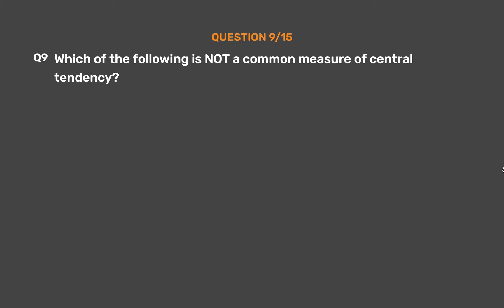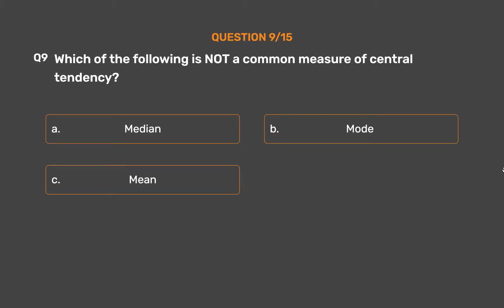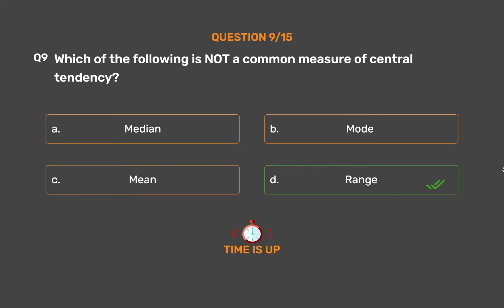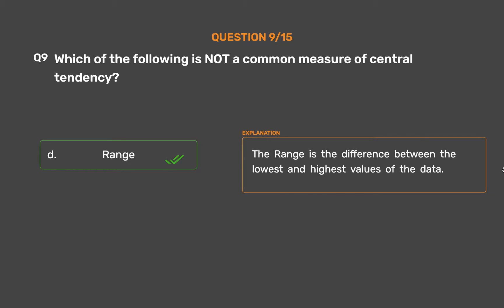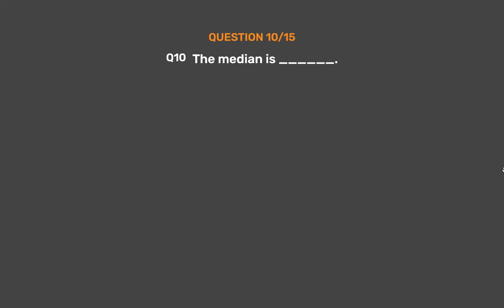Question number 9. Which of the following is not a common measure of central tendency? Option A: Median. Option B: Mode. Option C: Mean. Option D: Range. The correct answer is Option D: Range. The range is the difference between the lowest and highest values of the data.